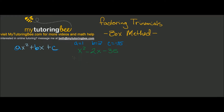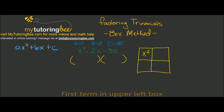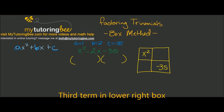When we are factoring trinomials, we split them up into two binomials — that's the pair of parentheses. We're going to use the box method, so let's draw the box with four quadrants. The first term, x squared, goes in the upper left-hand corner, and the third term, negative 35, goes in the lower right-hand corner.